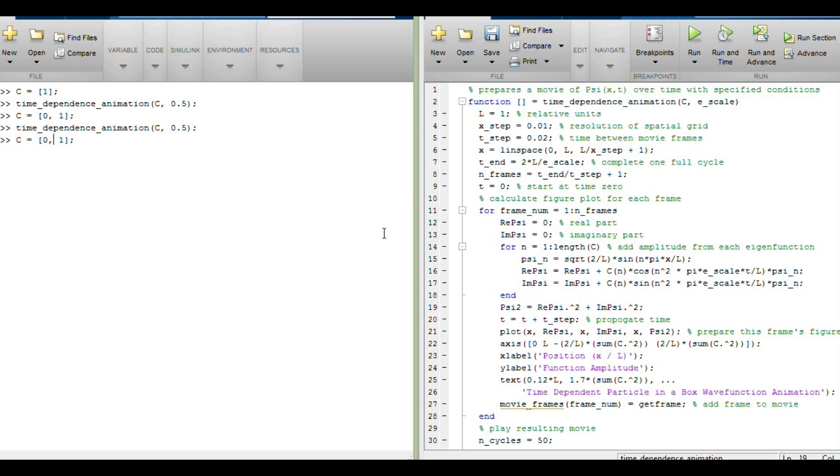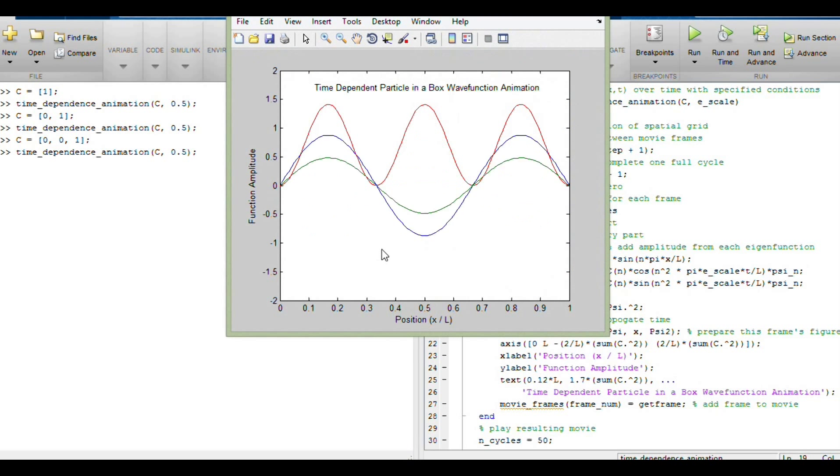And similarly, we can continue on to n equals 3, and we'll see the same trend going forward, that we've now got three peaks, we've got two of these nodes here where the wave function is zero at all points in time. You should notice the analogy to the classical wave equation for the vibrating string when we looked at those animations.